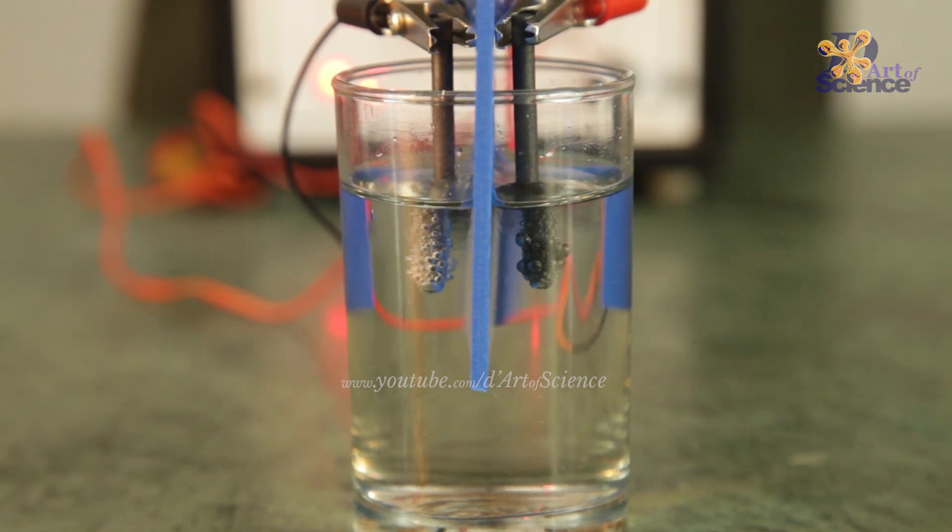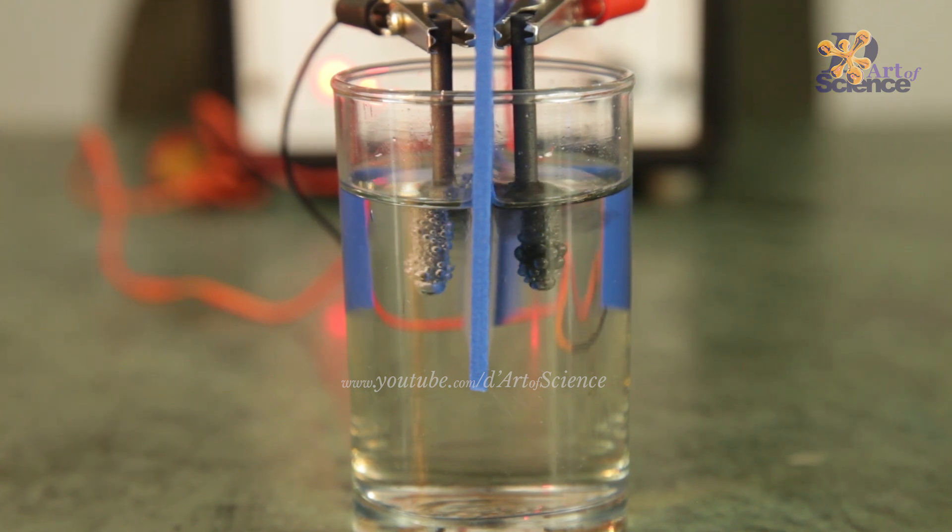And here you can see the bubbles forming. Oxygen gas bubbles form at the anode, that's the positive electrode. Hydrogen gas bubbles form at the cathode, that's the negative electrode.